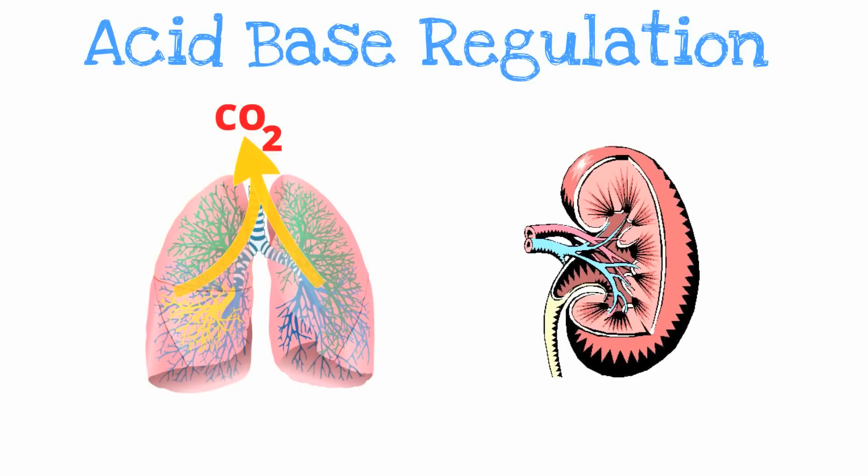Let's briefly talk about how acid and bases are regulated within the body. The two main organs involved in maintaining adequate acid-base balance are the lungs and the kidneys. If the serum pH is in the acidic range, the lungs are able to expel acid in the form of carbon dioxide. On the other hand, if the serum pH is alkaline, the respiratory rate slows down and we retain CO2 to compensate.